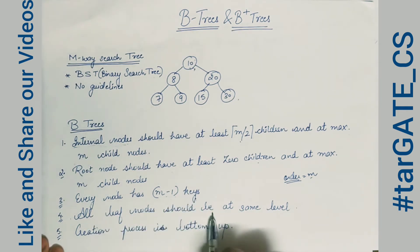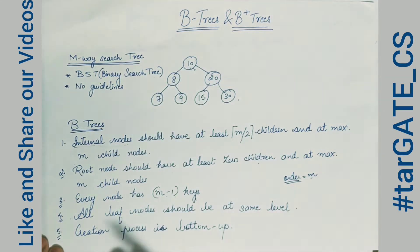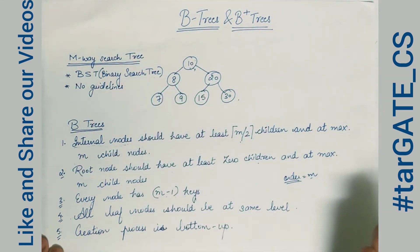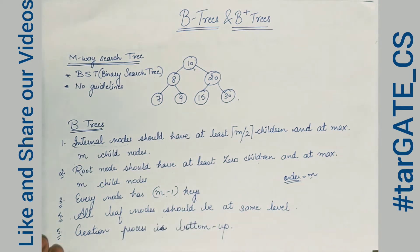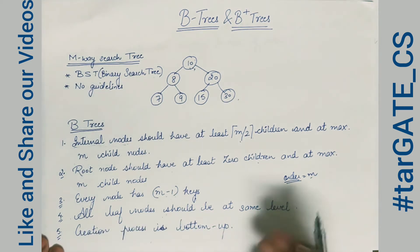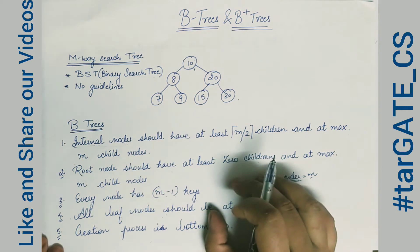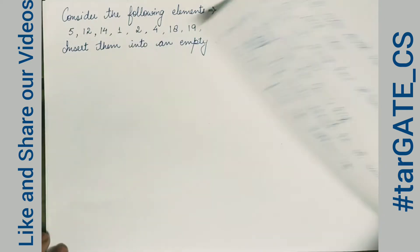All leaf nodes should be at the same level — this is a rule which was not present in M-way search trees. This is an important point. The creation process is bottom-up, so when we create a B tree we follow a bottom-up approach.